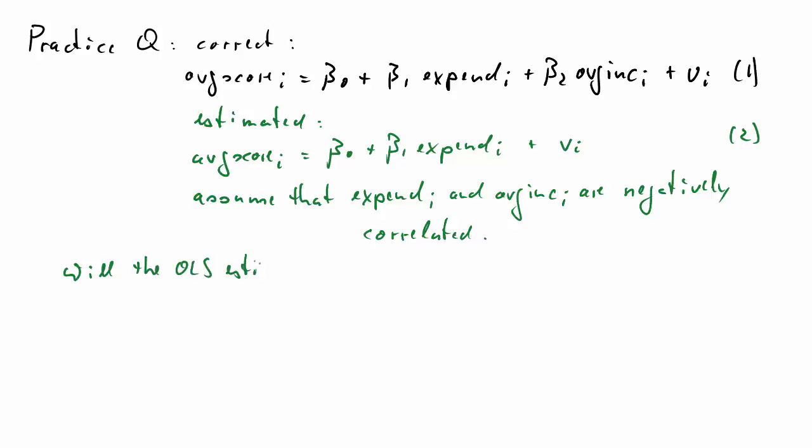The question is, will the OLS estimator for beta 1 from the estimation model 2 be unbiased or biased? And if it is biased, in what direction is the bias going to go? Is it a positive bias, so is beta 1 hat going to be larger than beta 1, or is it a negative bias? Pause and try and work it out for yourself.